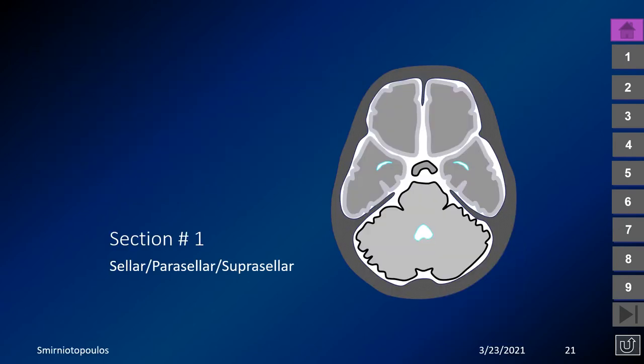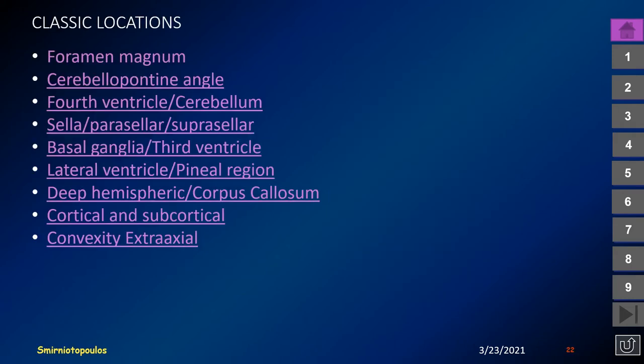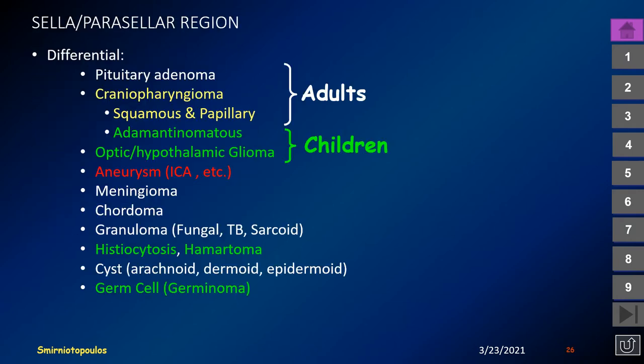Let's talk first about differential diagnosis for the sellar, parasellar, and suprasellar regions. Adult patients commonly have pituitary adenomas, but may also have craniopharyngioma. The type of craniopharyngioma in adult patients has a squamous and papillary histology. In contrast, in children, the most common lesions are optic and chiasmatic hypothalamic gliomas, or the adamantinomatous histology of craniopharyngioma.